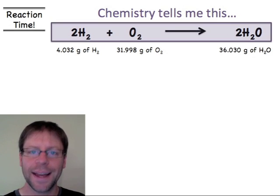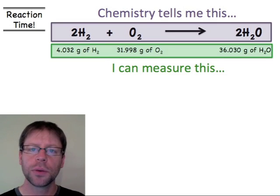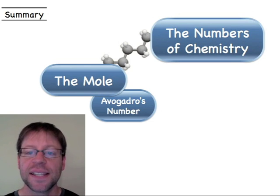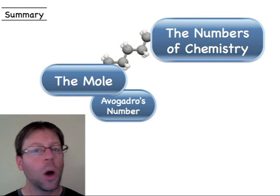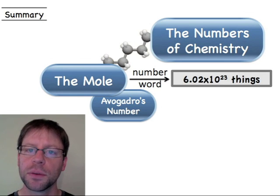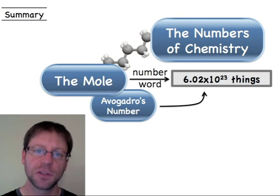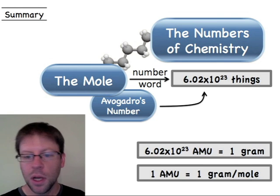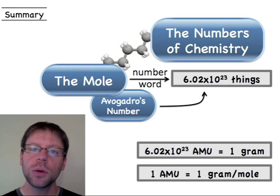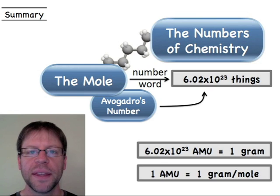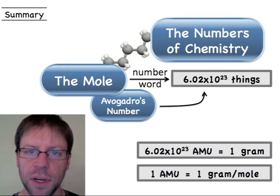That's something I can put on a scale in the lab, so chemistry tells me what I need and I as a scientist can measure it out and do the experiment. We come back to the idea that chemistry is a subject of numbers. From this video, hopefully you learned that the mole is a number-word meaning 6.02×10²³ — so important we call it Avogadro's number. Remember the two conversion factors: 6.02×10²³ AMU equals 1 gram, and equivalently, 1 AMU equals 1 gram per mole. That's very useful from the periodic table. Hopefully you got it all figured out!